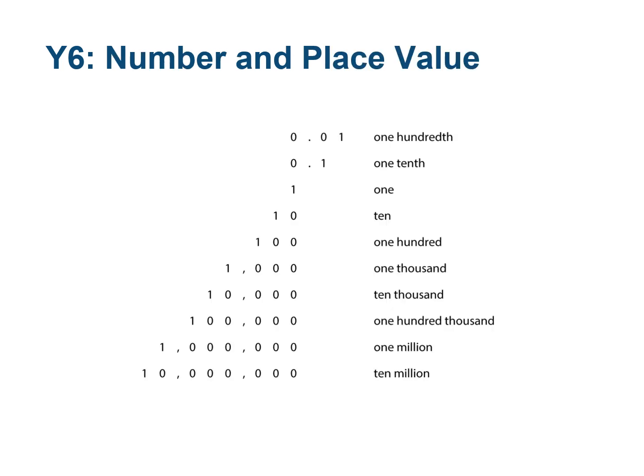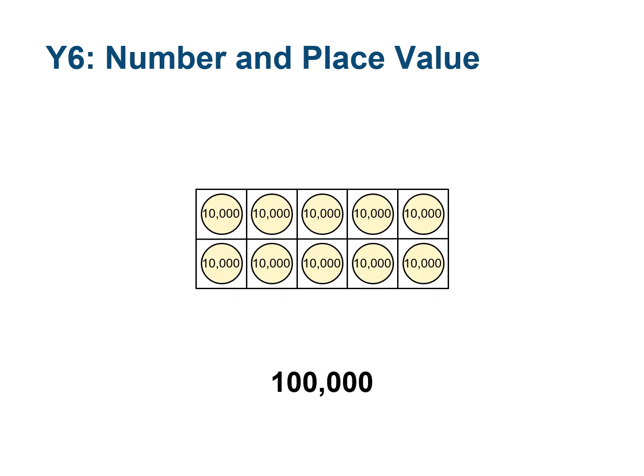By the end of Year 6, pupils should have a cohesive understanding of the whole place value system, from decimal fractions through to 7-digit numbers. They should be able to read and write numbers from one hundredth to ten million written in digits, beginning with the powers of ten. Pupils should also understand the relationships between these powers of ten — that each power of ten is equal to ten of the next smallest power of ten. For example, one hundred thousand is equal to ten ten-thousands, and one million is equal to ten one-hundred-thousands.